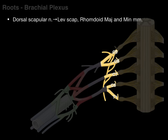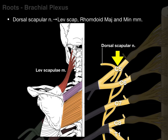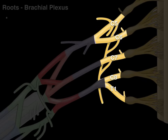Some of the branches off the roots include one called the dorsal scapular nerve that innervates our levator scapulae and rhomboid muscles. There is the C5 root, and there is the dorsal scapular nerve coming from the C5 root, innervating our levator scapulae, rhomboideus minor, and rhomboideus major muscles.